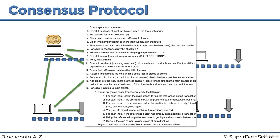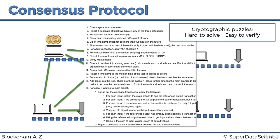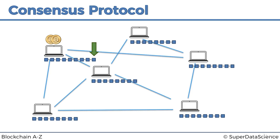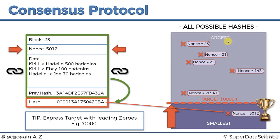One important thing before moving on: the cryptographic puzzle is hard to solve but easy to verify. In mining, you have to do billions of iterations — brute-forcing through nonce variations to find the right hash. But to verify, you just take all the values, put them into the hashing algorithm, get the hash, and check that it's under the target. Going back to the mining example, getting to the correct nonce requires billions of iterations, but to verify you just take the information, run it through the hash algorithm once, and check the result.